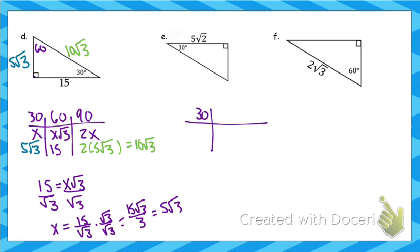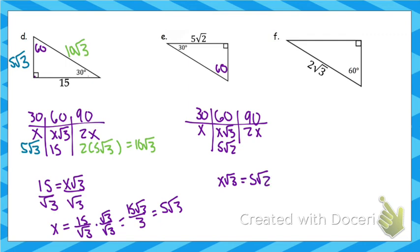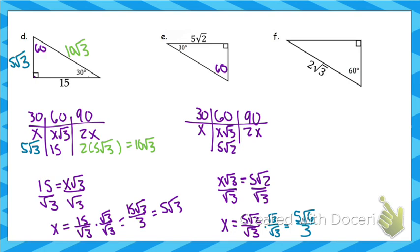Let's look at another. Chart: 30, 60, 90 with x, x√3, 2x. The 5√2 is across from 60, so x√3 equals 5√2. Dividing by √3 and rationalizing by multiplying top and bottom by √3 gives 5√6 over 3. That value replaces x across from 30, and 2 times that value is 10√6 over 3 across from 90.